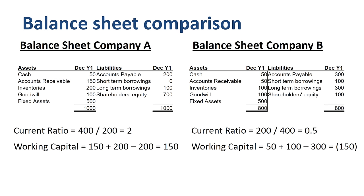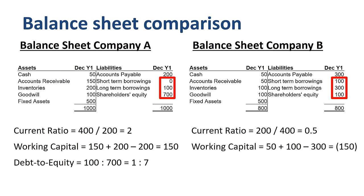The next financial ratio is all about the company's financing strategy. Does it primarily borrow money to finance operations, or rely on capital provided by the shareholders? The debt to equity ratio can help you put that in perspective. For company A, 100 in borrowings and 700 in equity gives a debt to equity ratio of 1 to 7 — a conservative and robust way of financing, with a big buffer of equity that helps defend business continuity in case of future losses.